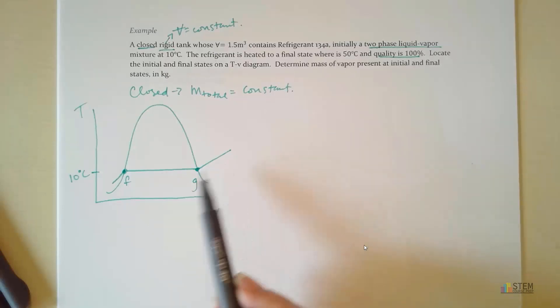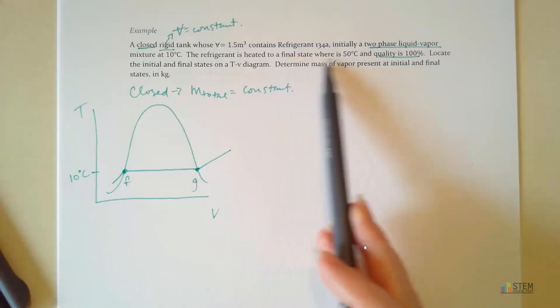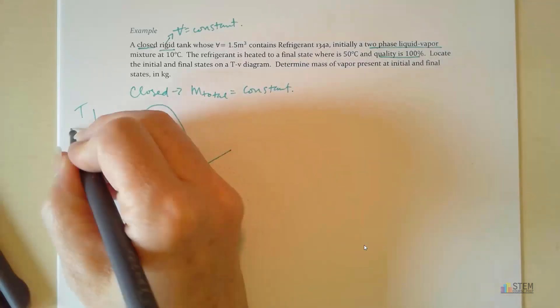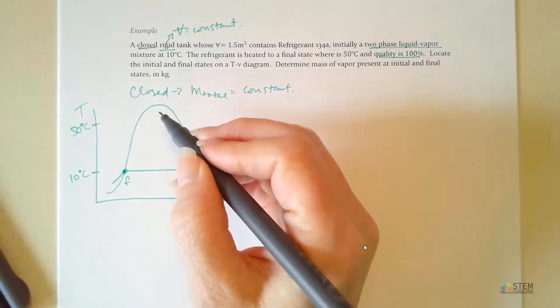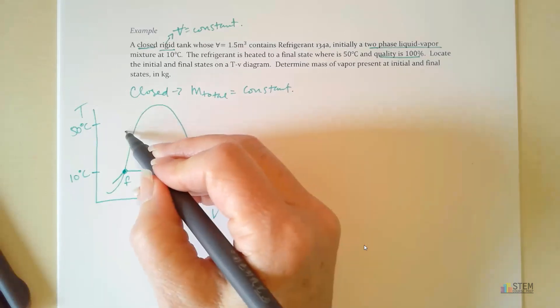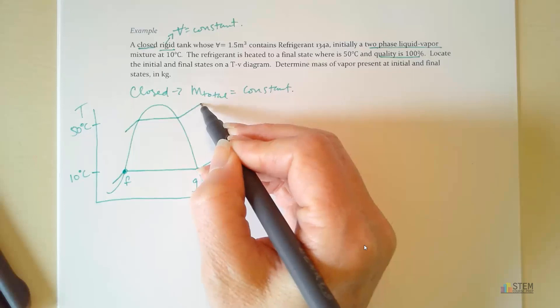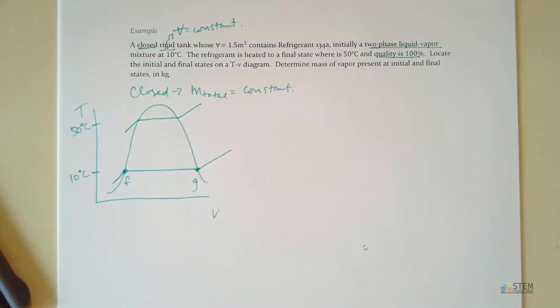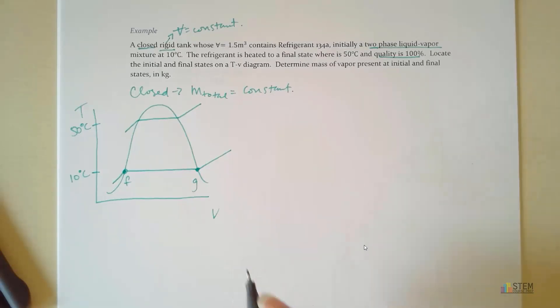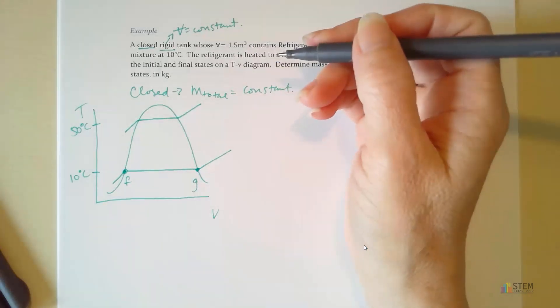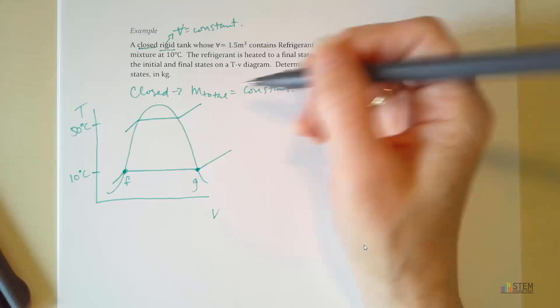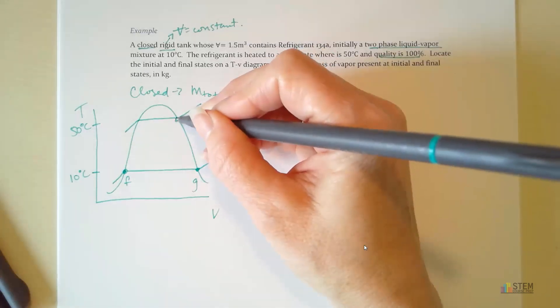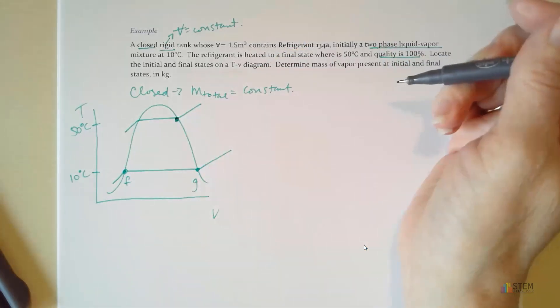Now, before we draw state one, let's look at the second state. We're going to go to a final state where temperature is 50, so let's put 50 up here. Now we're going to have a pressure line that looks like that. Now we said we have a rigid tank, so our volume is going to be constant, which means our specific volume will also be constant, since we have constant mass. So now, if this right here is state two, can you figure out why I put that dot there for state two?